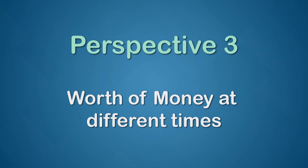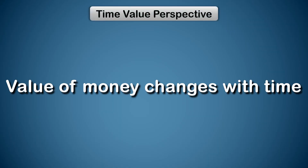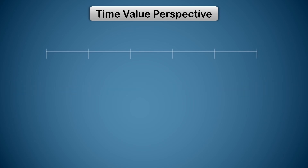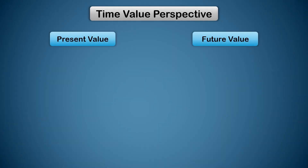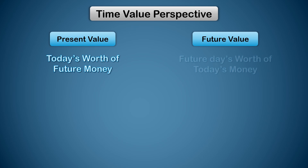The concept of time value of money suggests that the worth of the same amount of money keeps changing over time. Fifty years ago, an income of 10,000 rupees per month would make you rich, but today that amount is at the level of minimum wages. In this context, present value can be defined as today's worth of future money, and future value can be defined as a future day's worth of today's money.